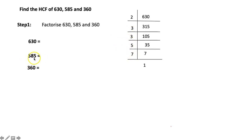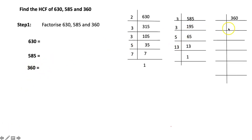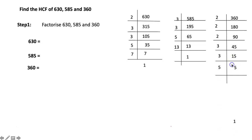Next, 585 is divisible by 3, giving 195, which is divisible by 3, giving 65, which is divisible by 5, giving 13. So the prime factors of 585 are 3 × 3 × 5 × 13. For 360, we get 2 × 2 × 2 × 3 × 3 × 5.